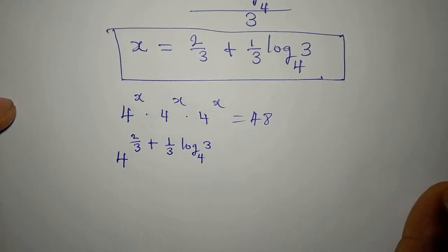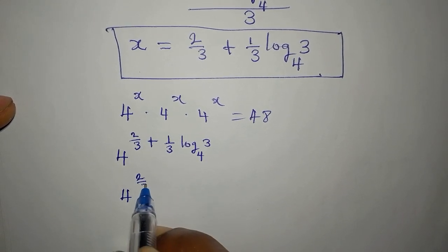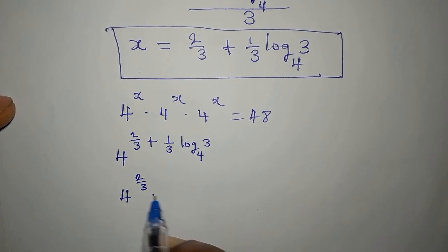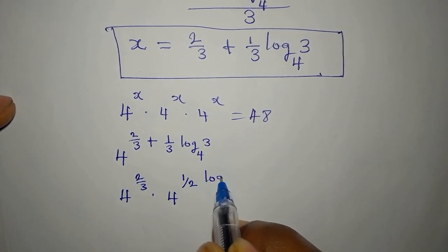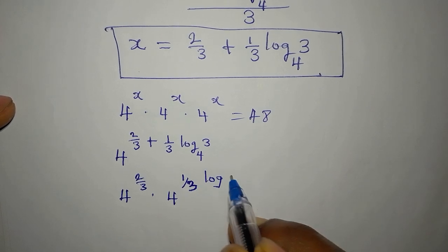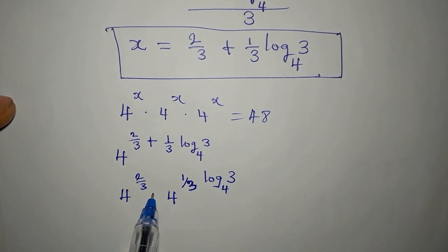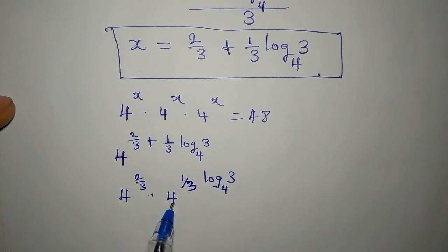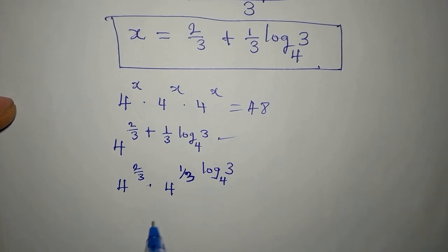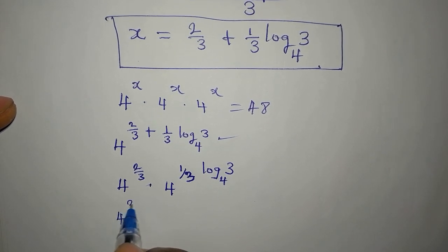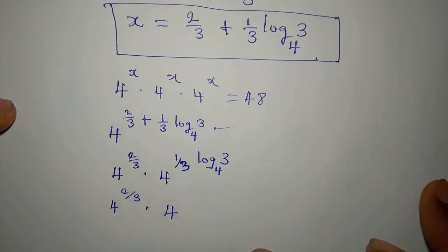So this is the same as 4 to the power of 2/3 multiplied by 4 to the power of (1/3)log₄3. According to the laws of indices, when you pick one base and add the powers, you get back the original expression.